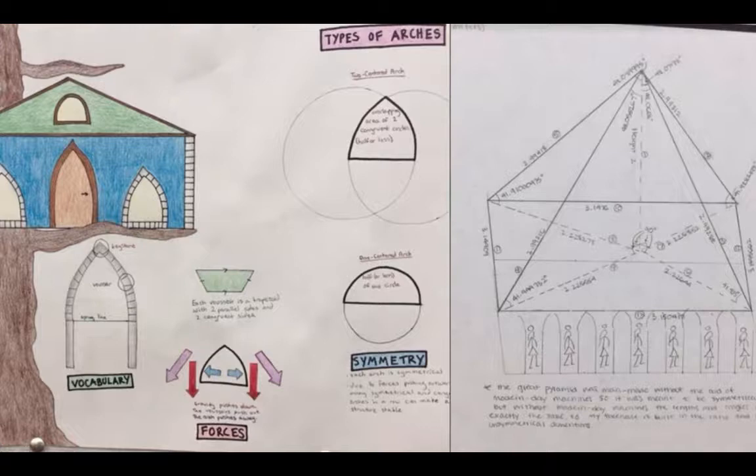And Jordan, on the left, she wanted to look at the history of the arches from the vocabulary, forces, and symmetry. And so her treehouse is standing there on a ledge with different arches, and then she shows the two-centered arch and then the one-centered arch. And Katrina wanted to study Egyptian architecture, and she analyzed the Great Pyramid and explored the ratios of height and slope between them.